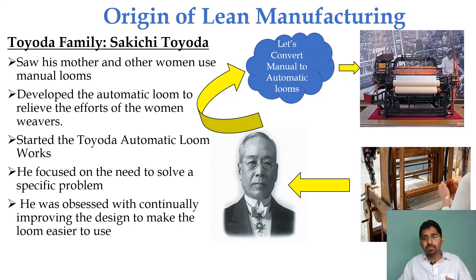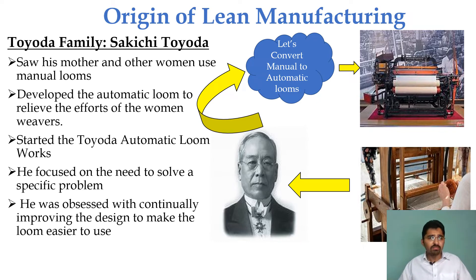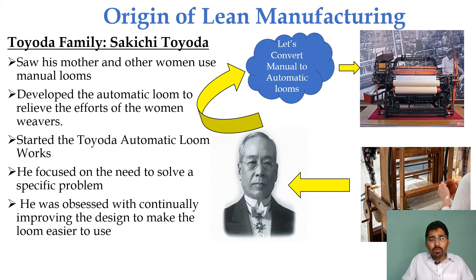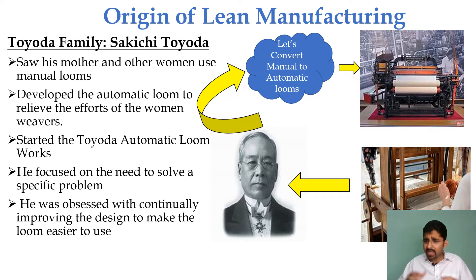Sakichi Toyoda saw his mother and other women using manual looms, so he developed an automatic loom to relieve their efforts. He started the Toyota Automatic Loom Works, focused on solving specific problems, and was committed to continually improving the design to make the loom easier to use.